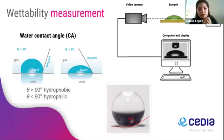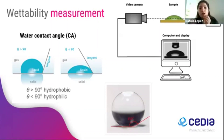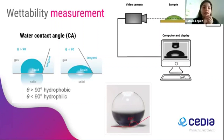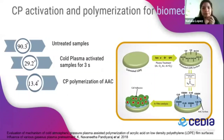Usually, the water contact angle is measured: an image of a water droplet projected onto a screen, where the angle is measured as the inner angle between the flat surface and the tangent of the drop. As this angle increases, hydrophilicity decreases.